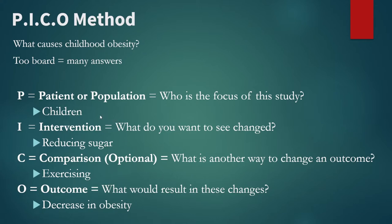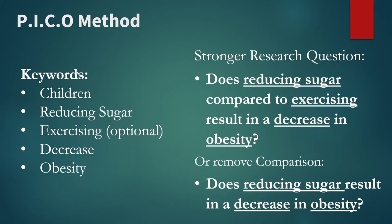If we break this down one at a time, we start asking questions. For P, we ask: who is the focus of this study? We're going to be using children. For Intervention, what do you want to see changed? When talking about childhood obesity, maybe we could talk about reducing sugar. For Comparison, what is another way to change an outcome? We could say exercising. And the Outcome would be: what would result from these changes? Maybe a decrease in obesity. So we take this all together and we have our keywords.